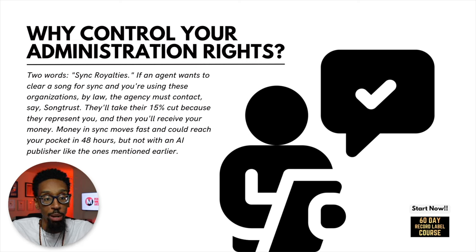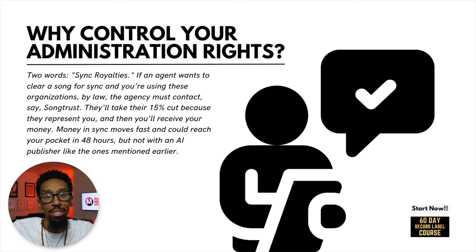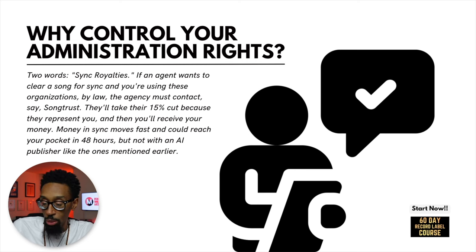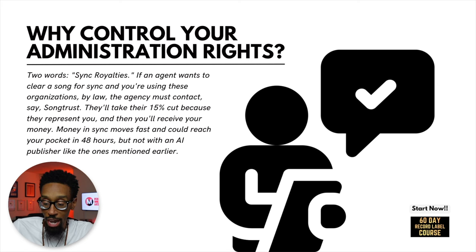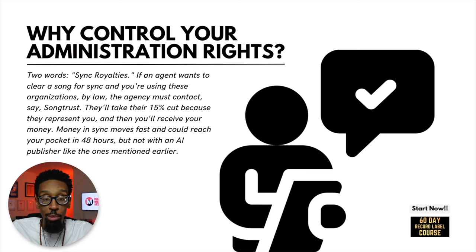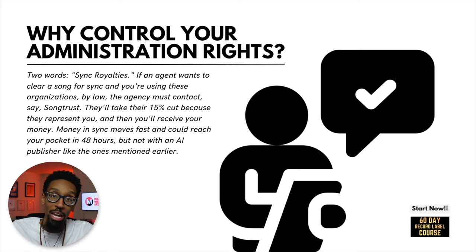Money in sync moves fast and could reach your pockets in 48 hours — but not with an automated publisher like those mentioned. SongTrust will take the phone call, clear it — of course they'll clear it, it puts money in their pocket — they won't negotiate. They just drop the bank account codes, wire it over, take their cut, and give you yours on the next royalty cycle. That money could have been in your pocket within 48 hours to two weeks for an upfront sync deal. Instead, you're waiting on SongTrust to pay quarterly — or semi-annually if you missed the quarter.